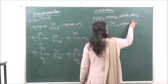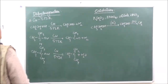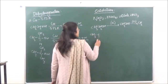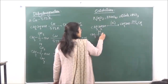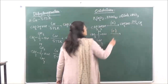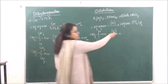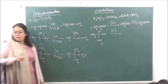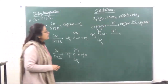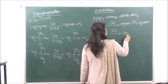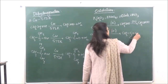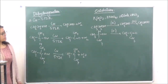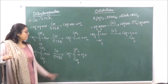Further oxidation gives us the carboxylic acid. When we are doing the secondary alcohol — CH₃CH(OH)CH₃ — oxidation gives us the respective ketone: CH₃C(=O)CH₃. If we are taking a tertiary alcohol, it does not undergo oxidation; it prefers undergoing dehydration.